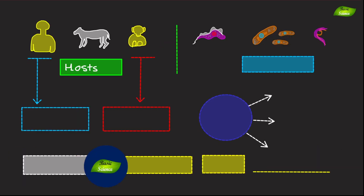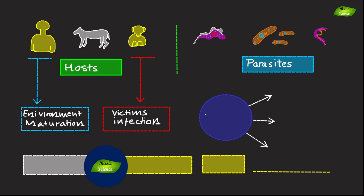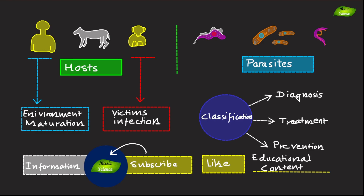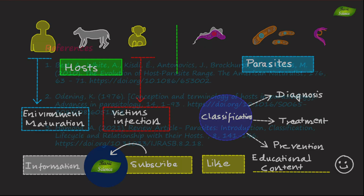Hosts exhibit a wide range of relationships with parasites, from acting as definitive environments for maturation to being accidental victims of infection. Recognizing these classifications aids in diagnosing, treating, and preventing parasitic diseases. If you found this information helpful, please subscribe to our channel and hit the like button — your support enables us to continue providing educational content. Thank you very much for watching.